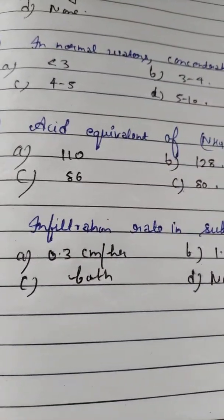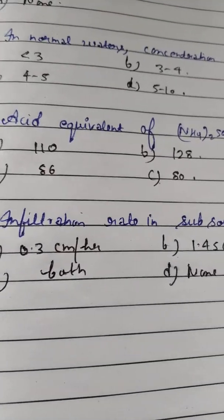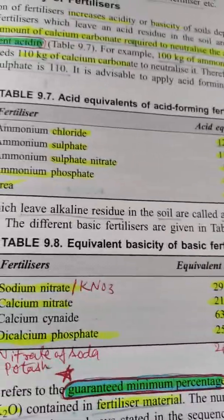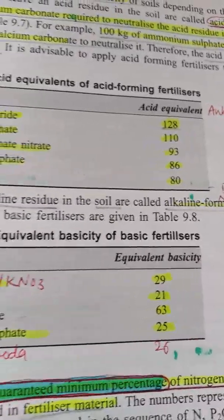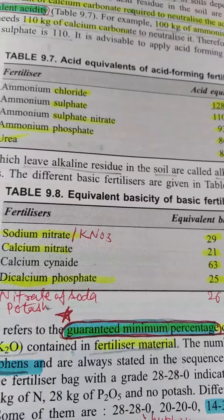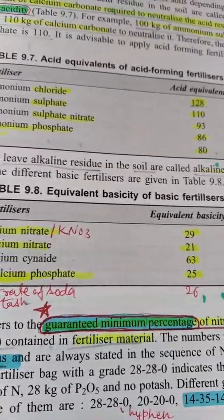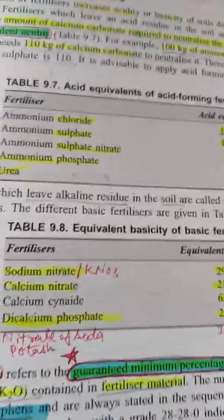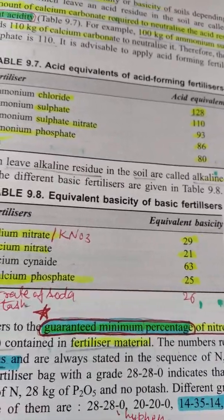Question number 9 is very important: the acid equivalent of ammonium sulfate. Option A: 110. Option B: 128. Option C: 86. Option D: 80. Ammonium chloride has an acid equivalent of 128; ammonium sulfate has 110; ammonium sulfate nitrate has 93; ammonium sulfate has 86; and urea has an acid equivalent of 80. Also remember equivalent basicity: sodium nitrate is 29; calcium nitrate is 21; calcium cyanamide is 63 (highest); dicalcium phosphate is 25; nitrate of soda potash is 26.